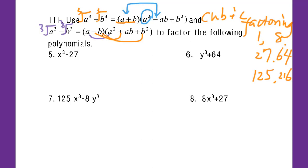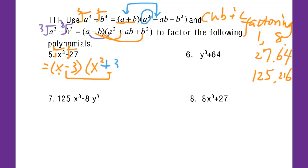Let's go to number five. I take the cubic root of both and get (x minus 3). For the second part, look at the first term — x — so I write x squared. Since this is a minus, the sign here becomes positive. Then 3 times x gives 3x, and 3 squared gives 9. That's it.